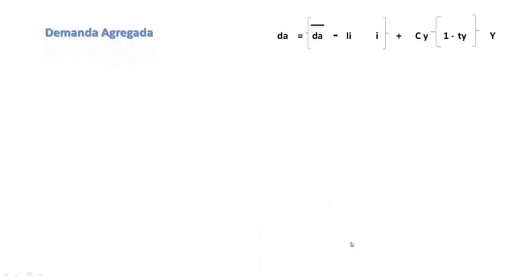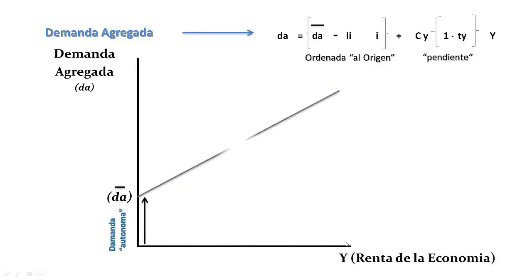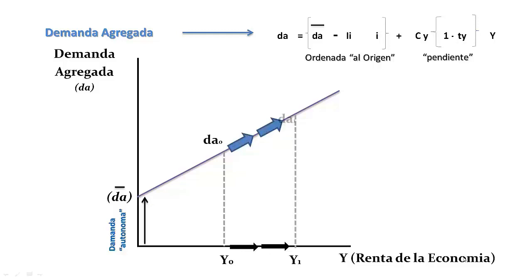Al hallar la demanda agregada en función de la renta, la graficaré en el eje de las abscisas y la renta en el eje de las ordenadas. Para un determinado nivel de demanda agregada autónoma, su pendiente será positiva. Si aumentase la renta porque aumenta el consumo de las familias, la inversión privada o el gasto público, entonces aumentará la demanda agregada, obteniendo un nuevo nivel de demanda agregada en la economía.